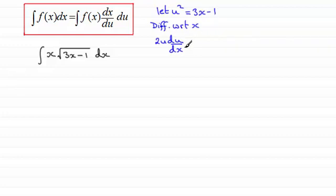And then differentiating 3x minus 1 with respect to x, that's going to be equal to 3. So rearranging this for dx/du, you're therefore going to get dx/du equaling 2u over 3.